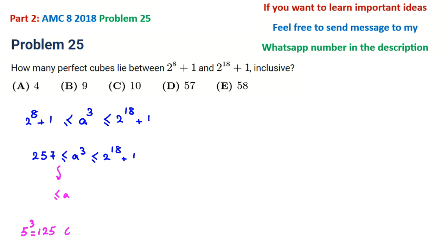So a is at least 7. Note that perfect cube means the cube of an integer, so a is an integer.